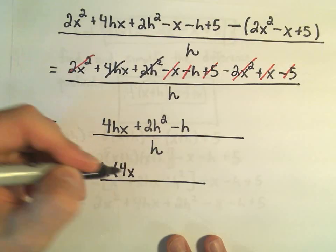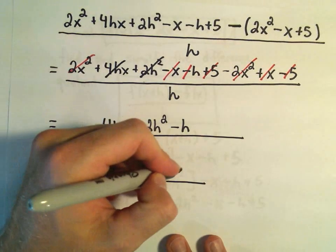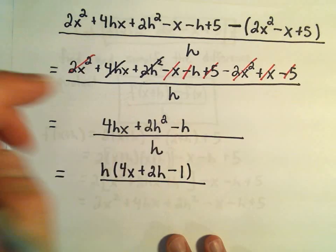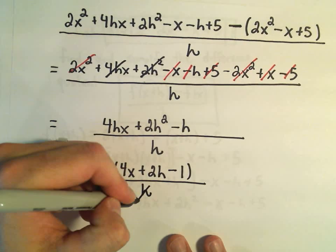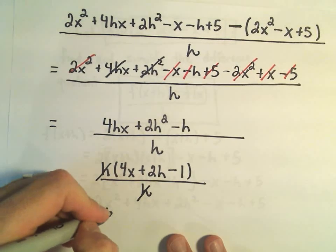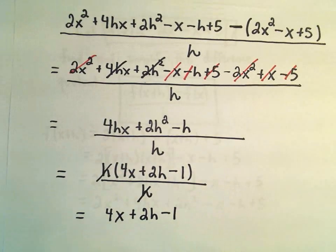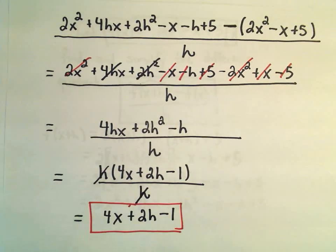And then I would have 4x plus 2h minus 1. Notice if you distribute all of that back out, we'll get the numerator. Divided by h. And now I can simply cancel out the h's. And I'm just going to be left with 4x plus 2h minus 1. And that's now going to be the simplified difference quotient to that original given function.